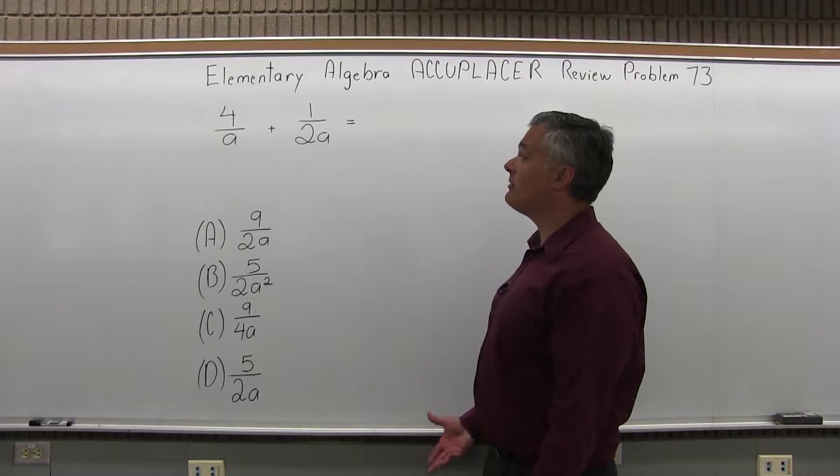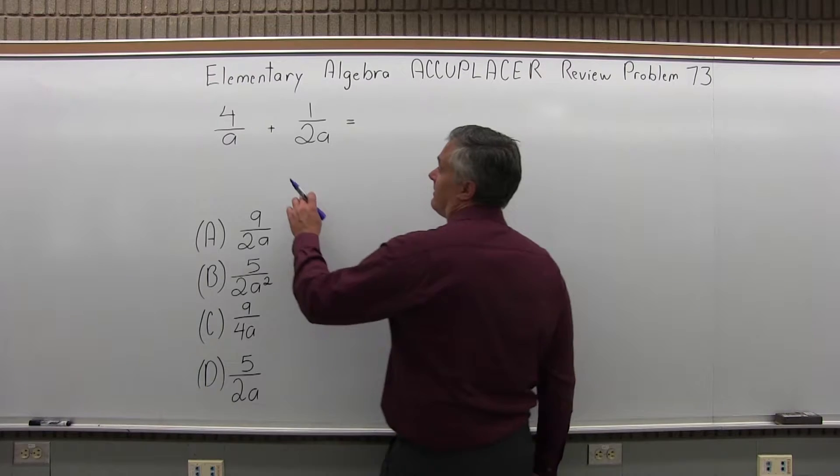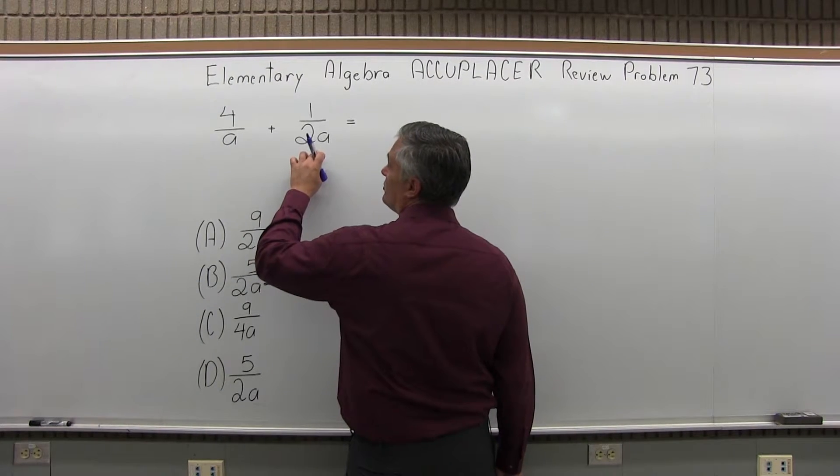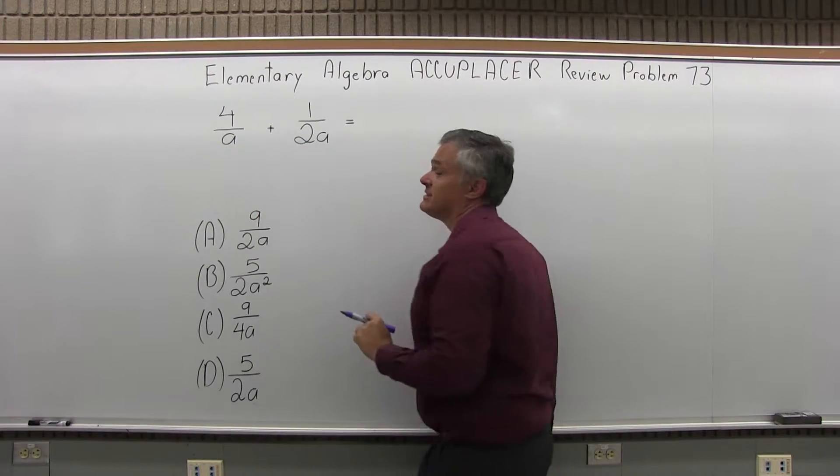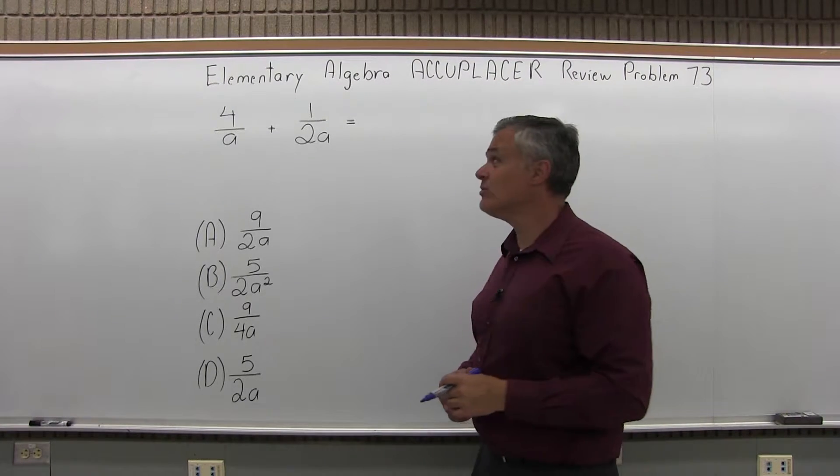We need to make a common denominator. I can make both denominators 2A, and then I will combine the numerators.